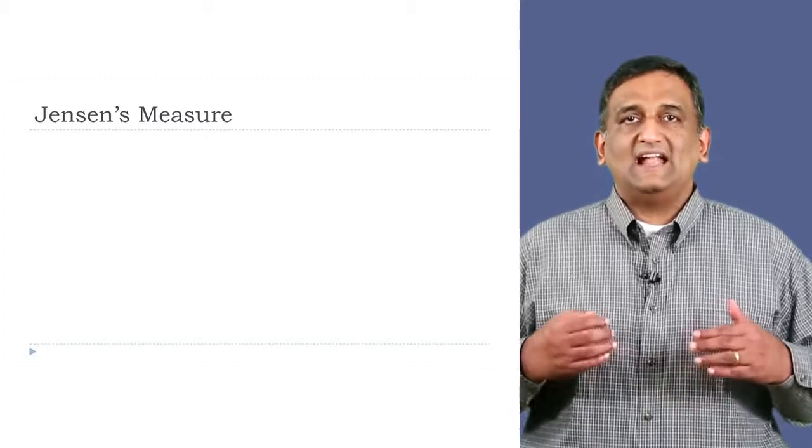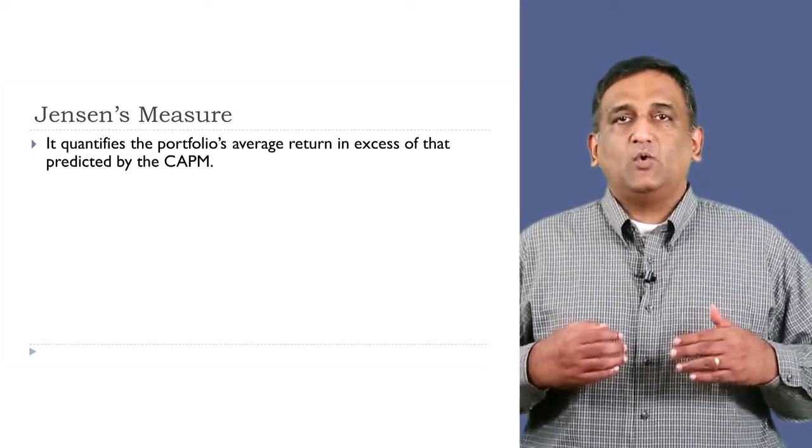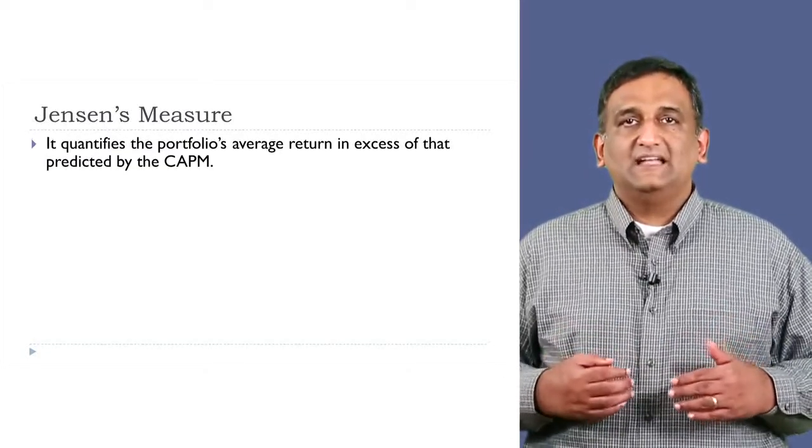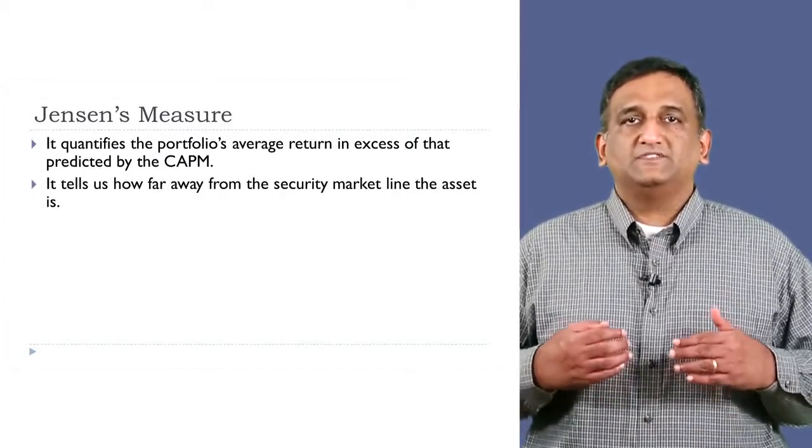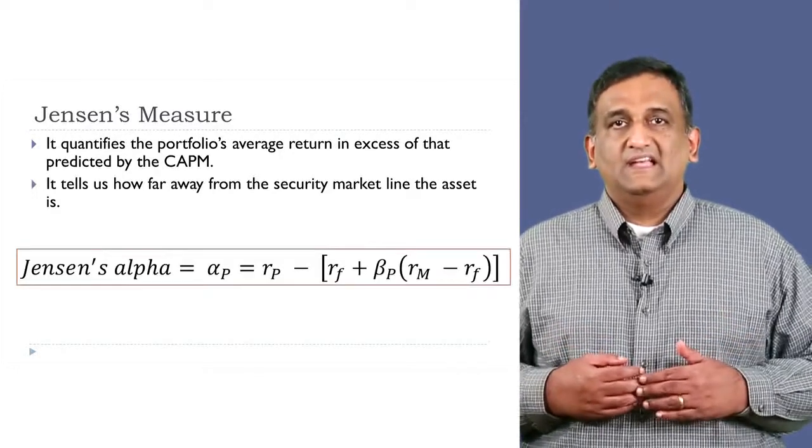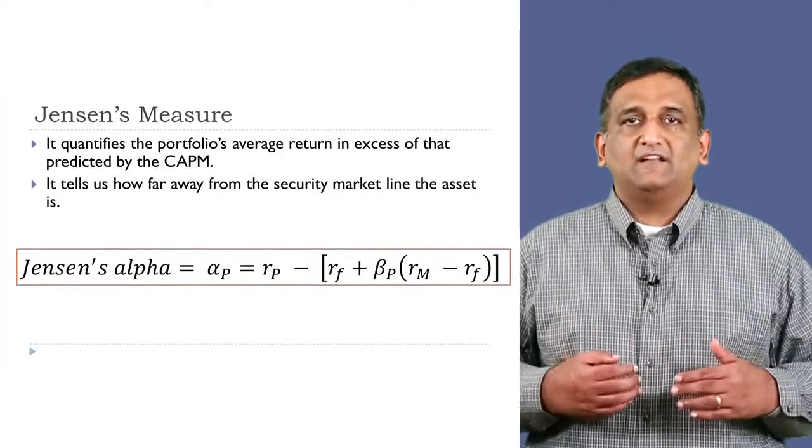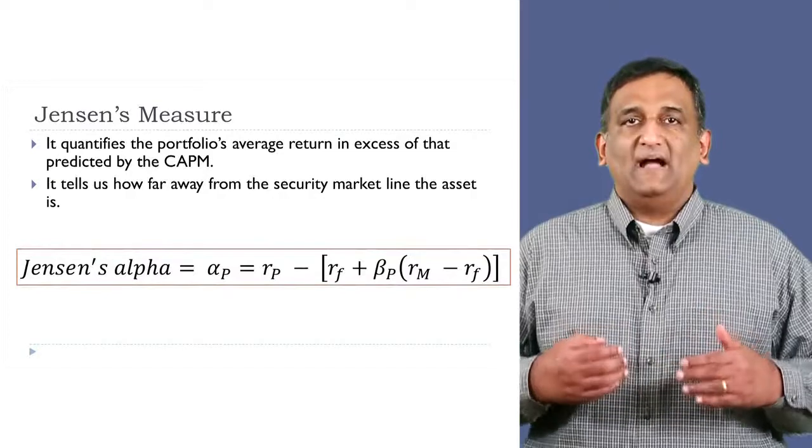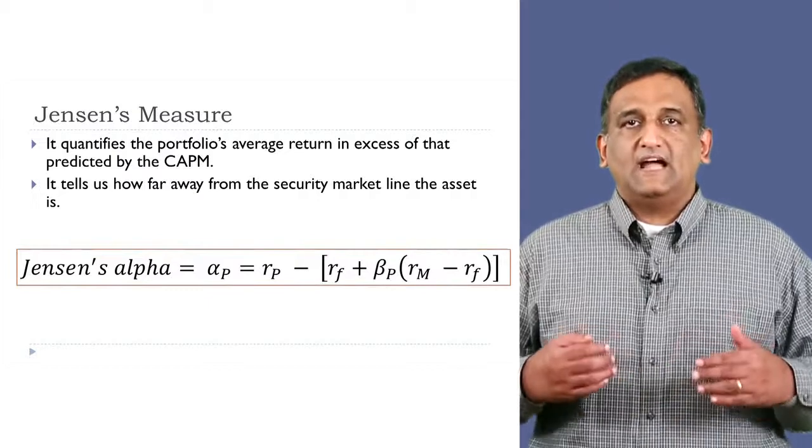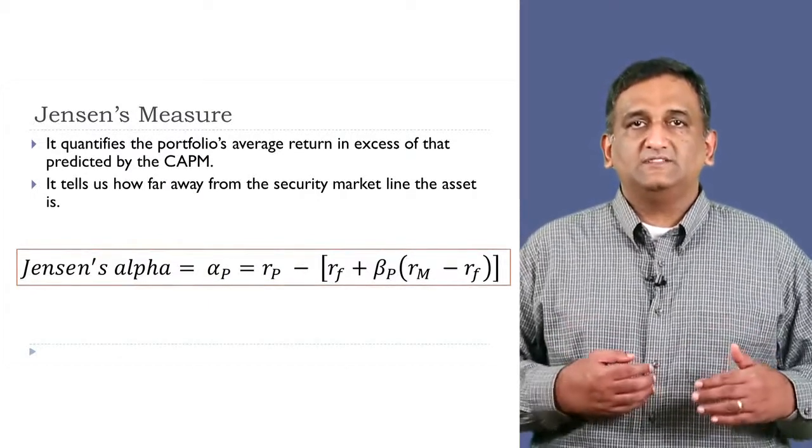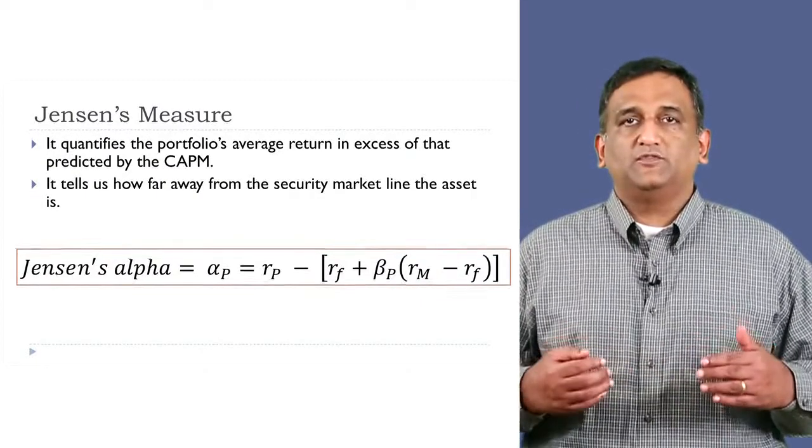A measure that addresses this drawback is the Jensen measure or portfolio alpha. It quantifies the portfolio's average return in excess of that predicted by the CAPM. It tells us how far away from the security market line the asset is. Jensen's measure, denoted by alpha sub p, is the difference between the average portfolio returns minus, within square brackets, the risk-free rate plus the portfolio's beta times the difference between the average market returns and the risk-free rate. The term within the square brackets is CAPM's prediction of the portfolio's returns.